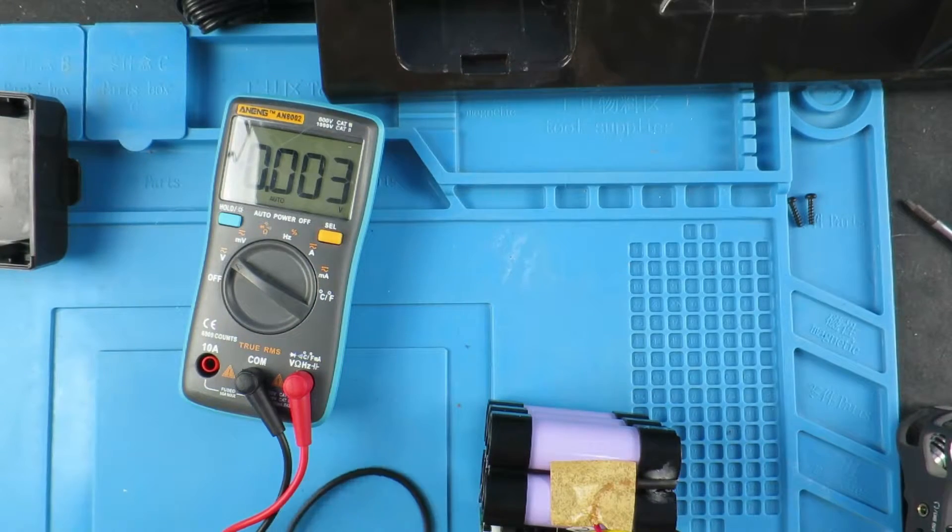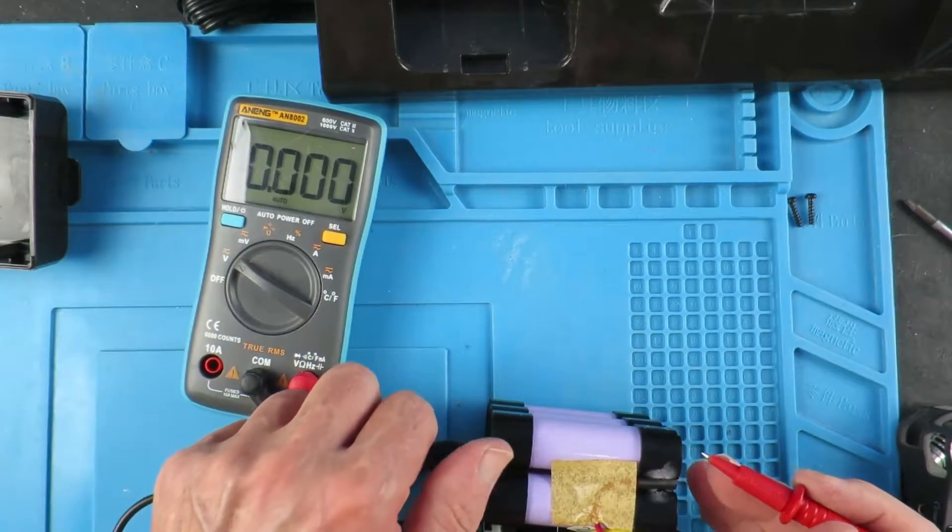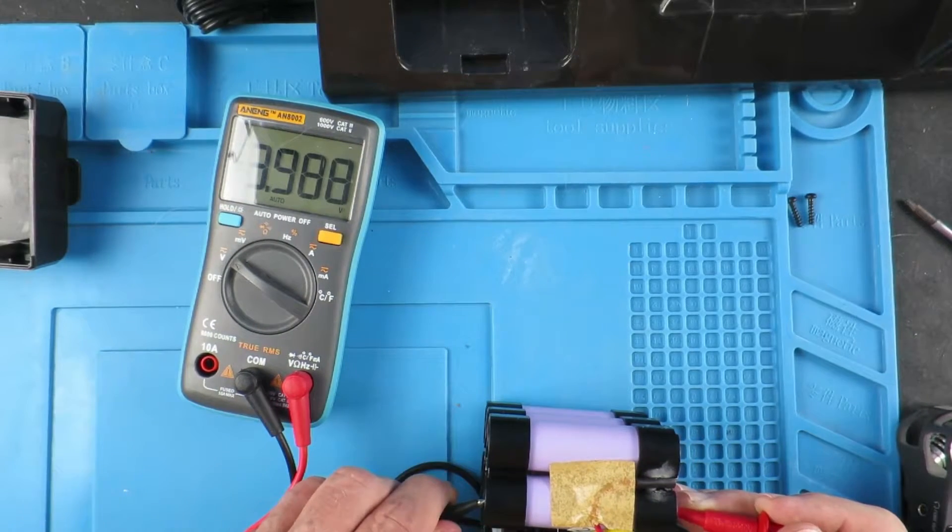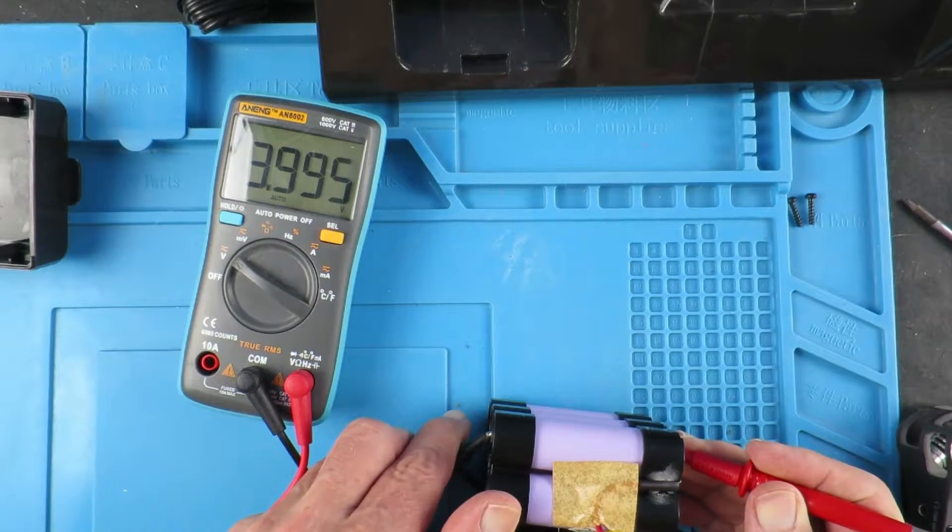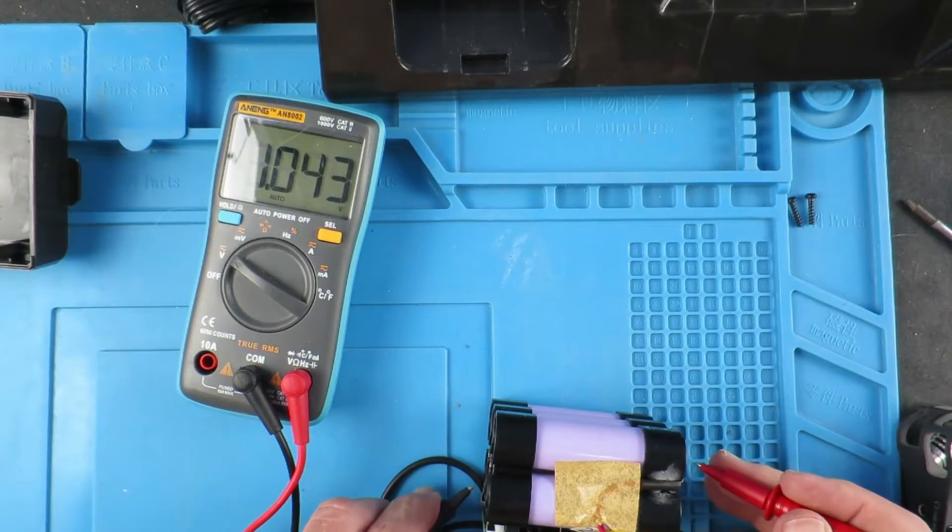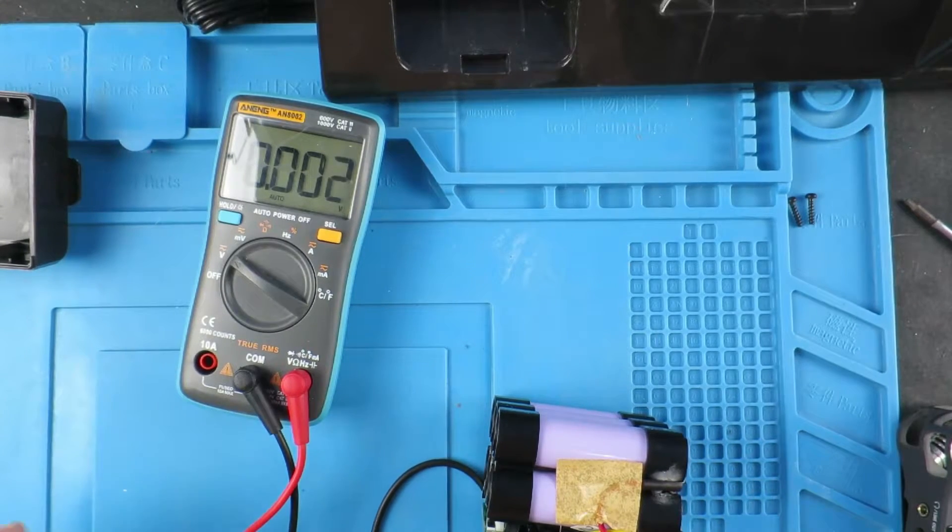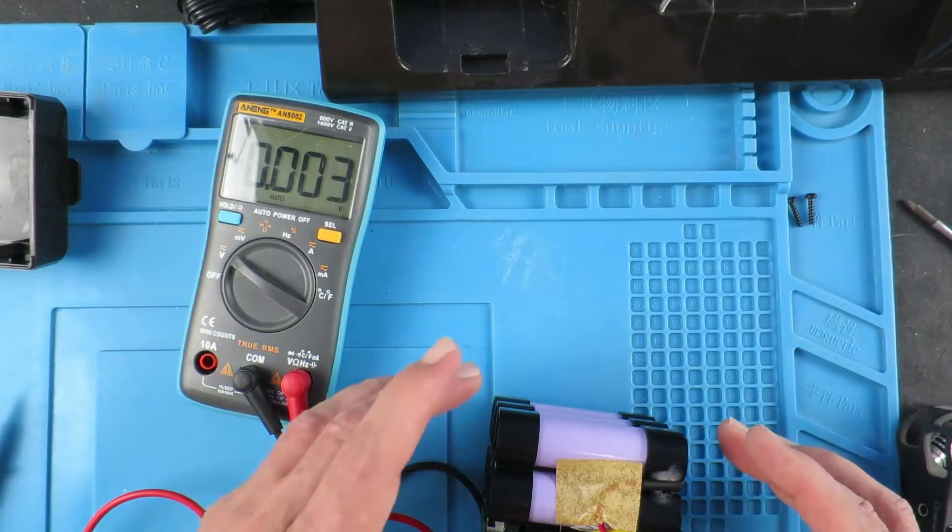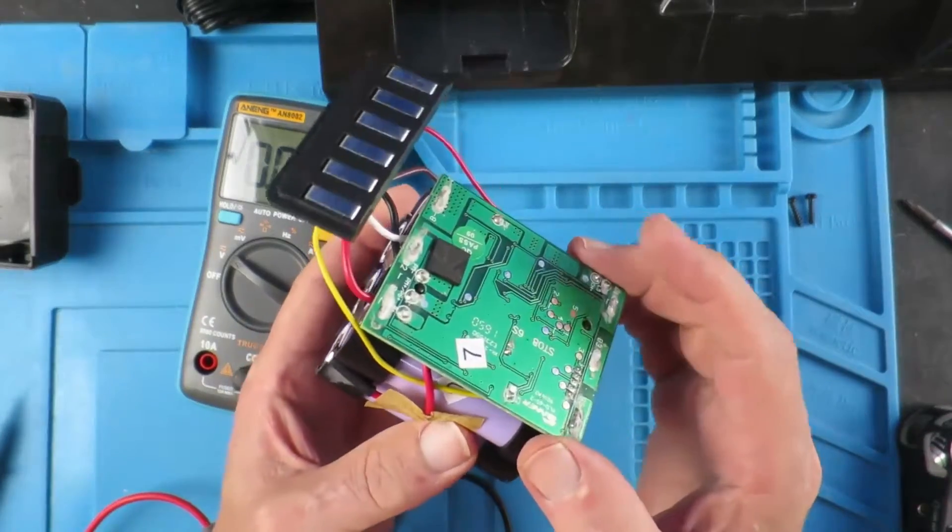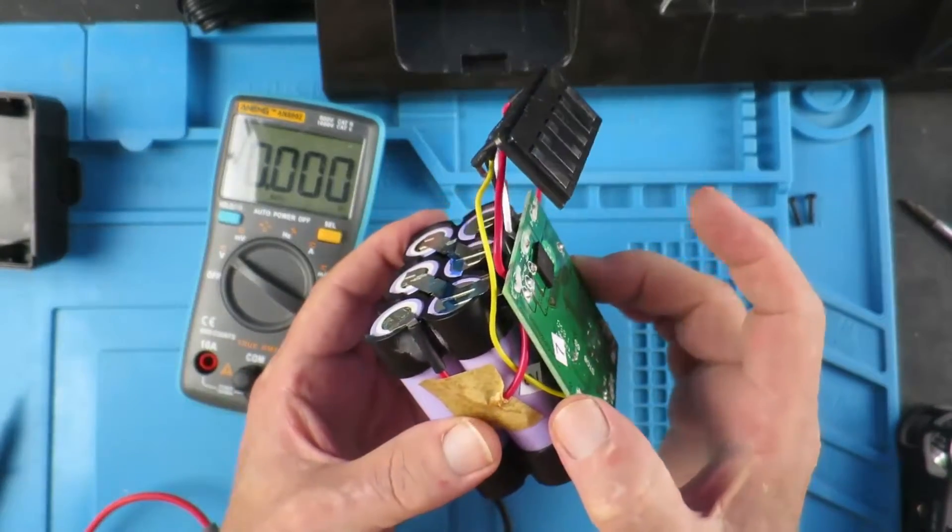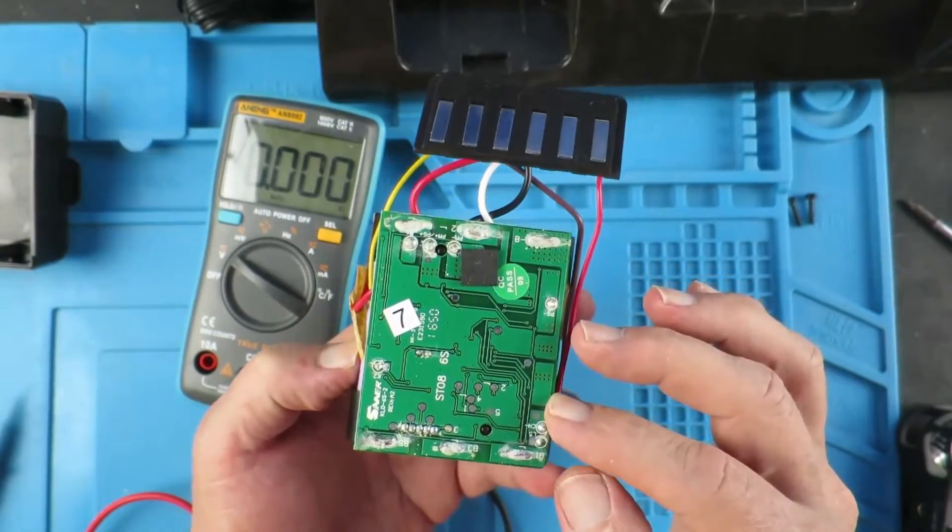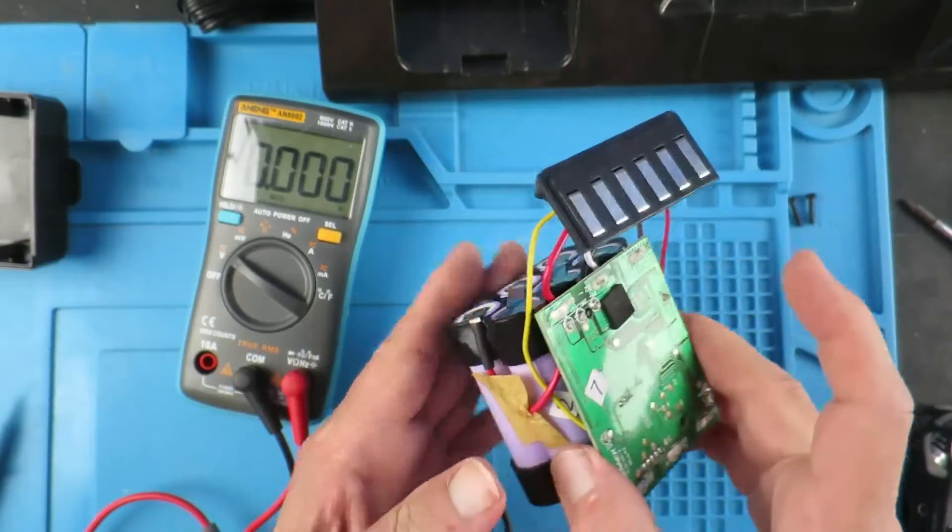We can start with this cell here which is 4 volts, 3.9, 3.9, 3.9, 3.9 and this one. So all of the cells are reading around about 4 volts. The only way we're going to be able to look at the circuit board itself is obviously to unsolder the cells from it. So let's go ahead and do that.